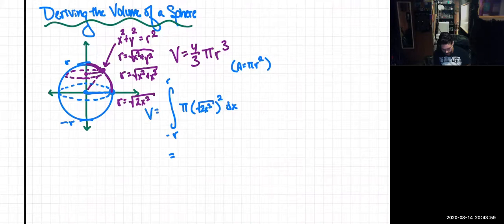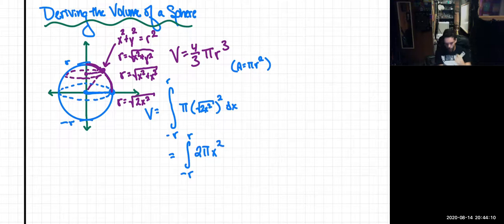And that is just going to be equal to the integral from negative r to r of 2 pi x squared dx, because square root and the square just cancel each other out. And now we can integrate.